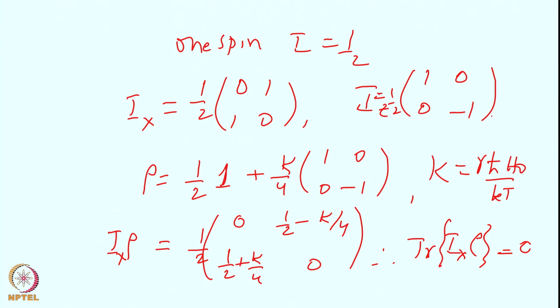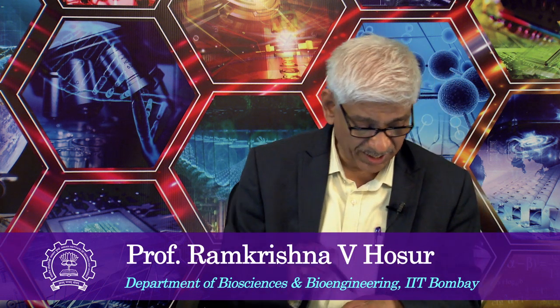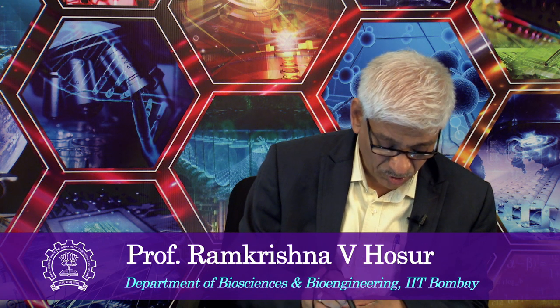Therefore there is no x-magnetization in the equilibrium state. This was stated earlier: at thermal equilibrium, off-diagonal elements are zero, and this is mathematically confirmed — the x-magnetization is zero at equilibrium. Now, suppose you are dealing with a non-equilibrium state, which often arises when you perform various kinds of manipulations. You can create a density matrix which has non-zero off-diagonal elements, whereas in the equilibrium case the off-diagonal elements are zero.